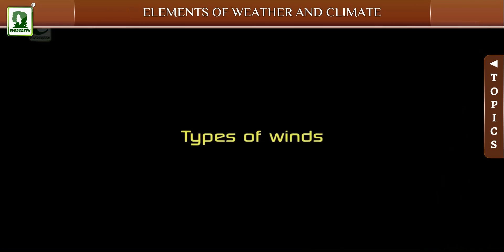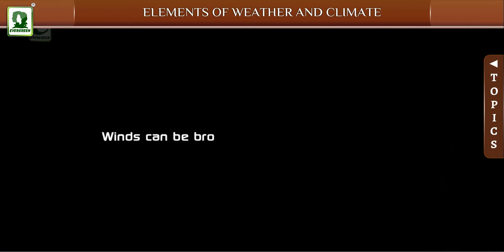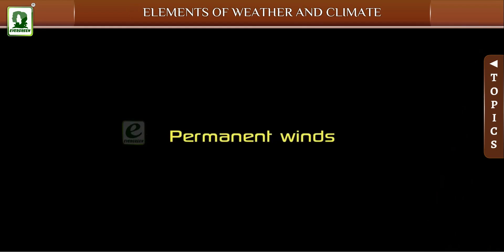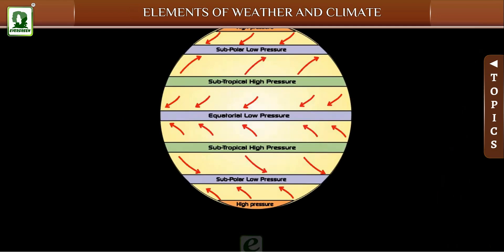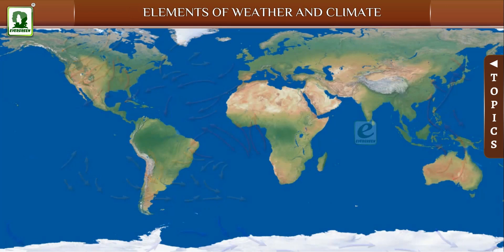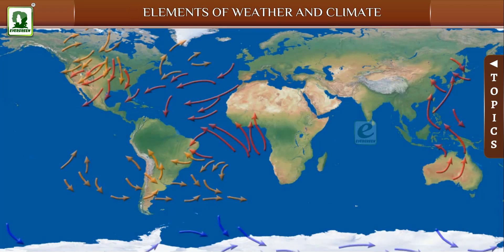Winds can be broadly divided into three types. The first type is permanent winds — the winds that blow between the major pressure belts of the earth. They are called permanent winds because they blow in a particular direction constantly throughout the year.